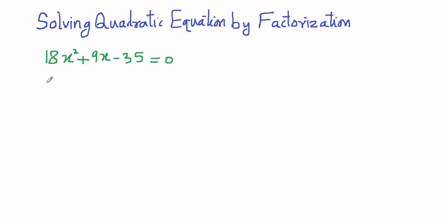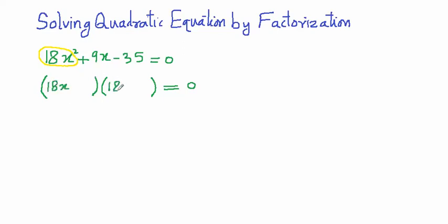To solve this, we have to make two factors such that their product is equal to 0. To get these two factors, we ignore the square and consider only this part. We write 18x in one bracket and 18x in the other bracket, then we multiply 18 with -35.